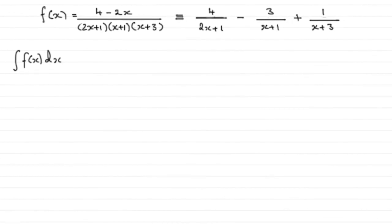Now for this part, we've got to integrate f of X with respect to X. We discovered that f of X in the previous part was equivalent to these three individual fractions, and you'll notice I've put the constants that we found in above them.